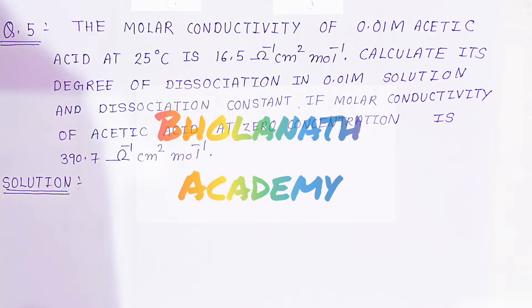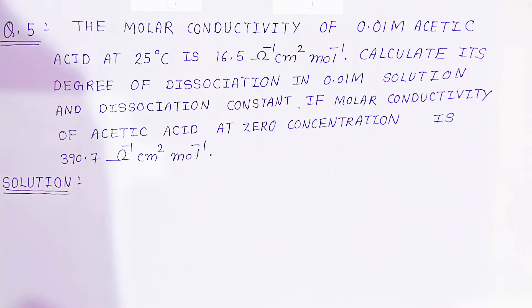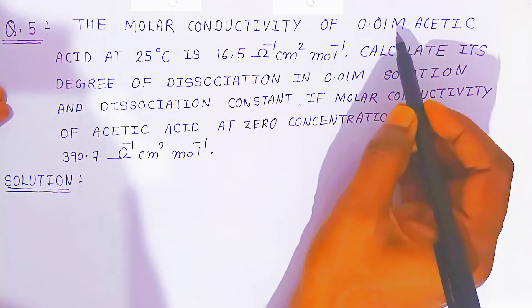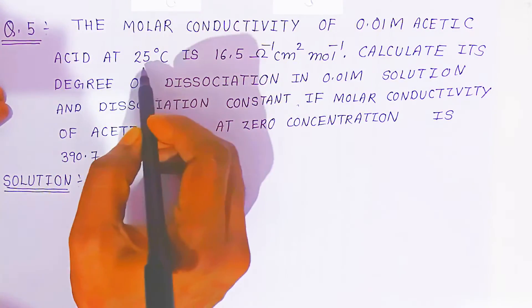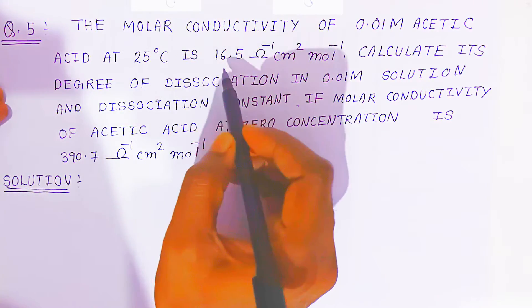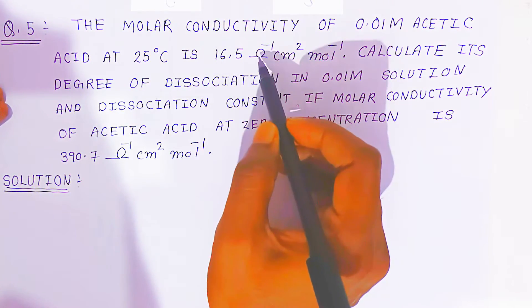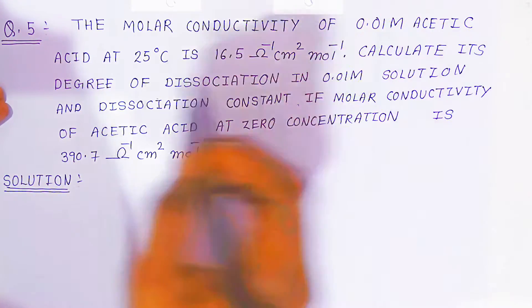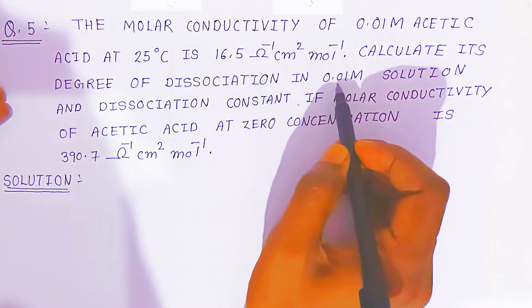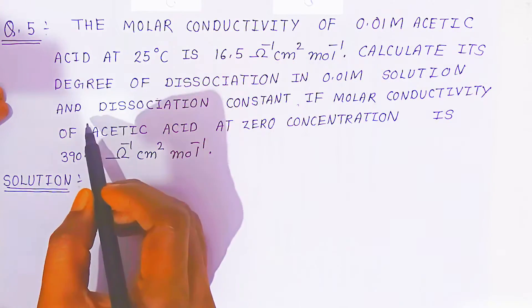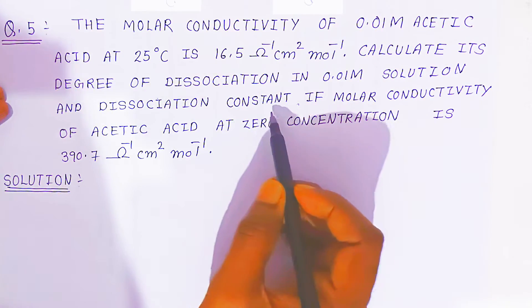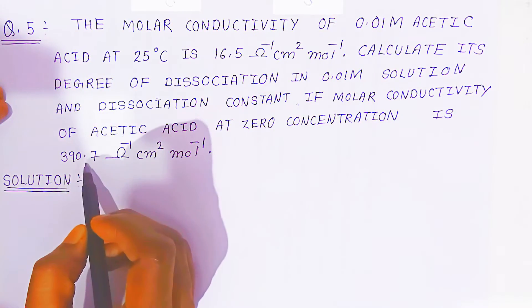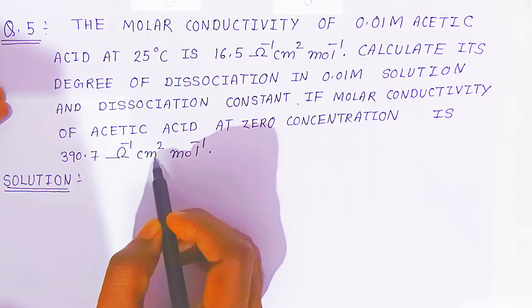Hello students, once again welcome to Bolanath Academy. In this video we are going to see question number 5. The molar conductivity of 0.01 molar acetic acid at 25 degree Celsius is 16.5 per ohm centimeter square per mole. We have to calculate the degree of dissociation of 0.01 molar solution and dissociation constant, if molar conductivity of acetic acid at zero concentration is 390.7 per ohm centimeter square per mole.